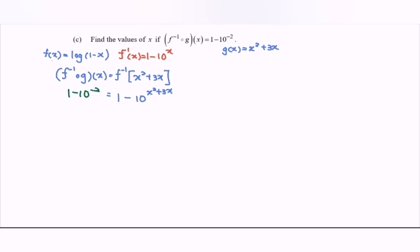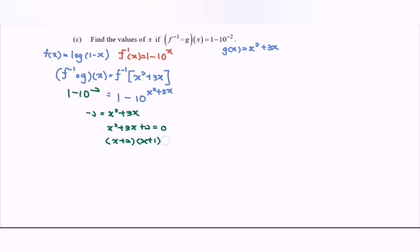Comparing both sides, negative 2 equals x squared plus 3x. Rewriting: x squared plus 3x plus 2 equals 0. Factoring: (x + 2)(x + 1) equals 0. So the values of x are negative 2 and negative 1.